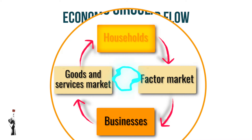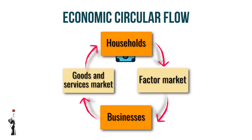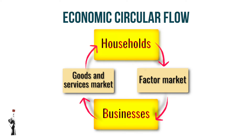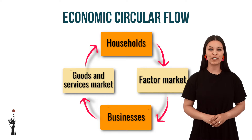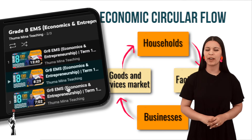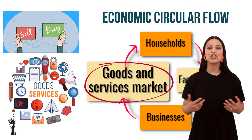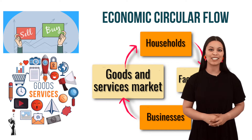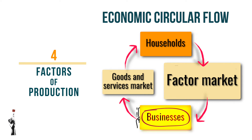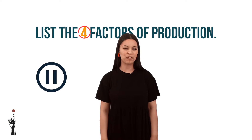Circular flows consist of four important aspects. The flow of money, products and services occurs between households and businesses. This flows through two very important markets that you already learned about in grade eight. The first is the goods and services market, which shows the production and sale of goods and services. The factor market indicates all the factors of production used by businesses and offered by households. Can you still remember what the four factors of production are?